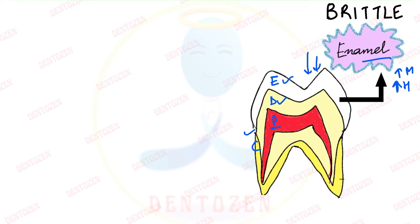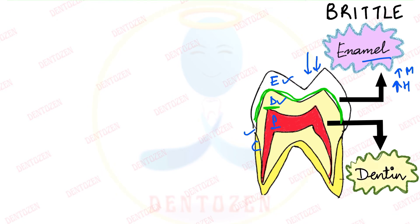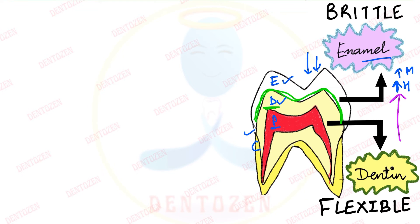Because enamel is brittle, it needs support, and that support is provided by the tissue present beneath it — dentine. Dentine is a more flexible tissue that supports the enamel and helps in preventing its fracture. If we look at dentine and pulp, they are both related to each other.